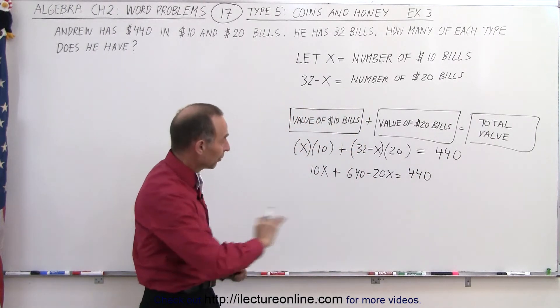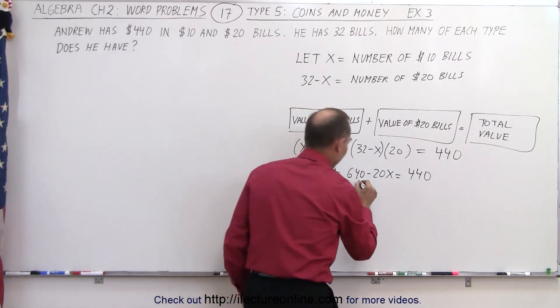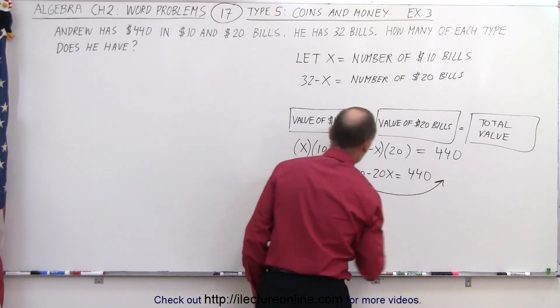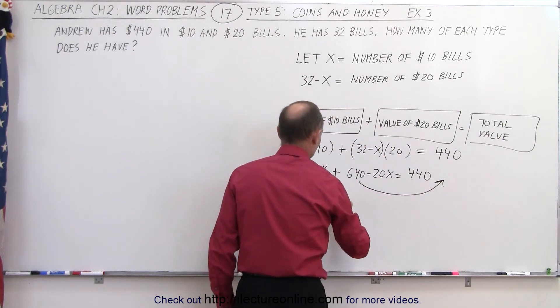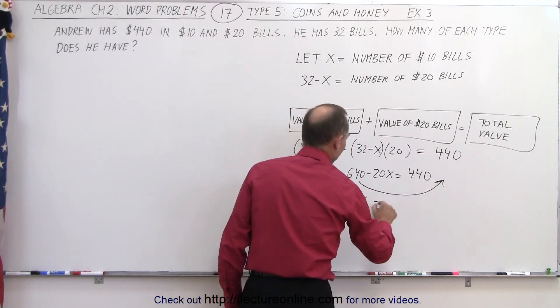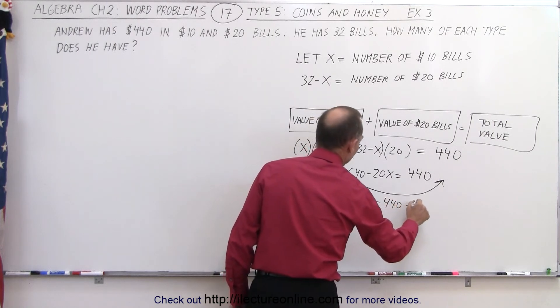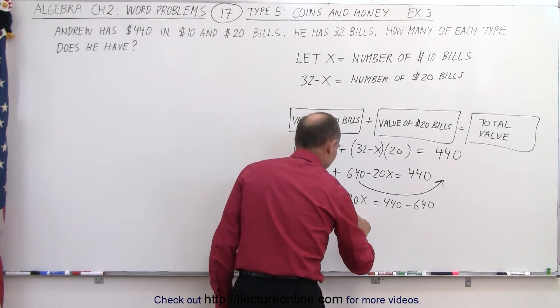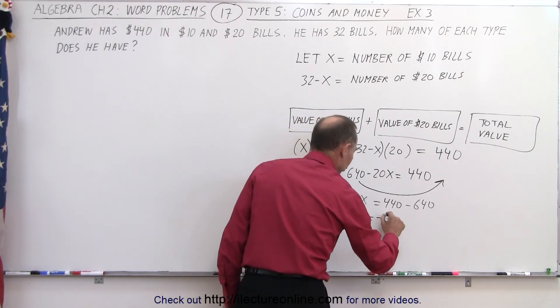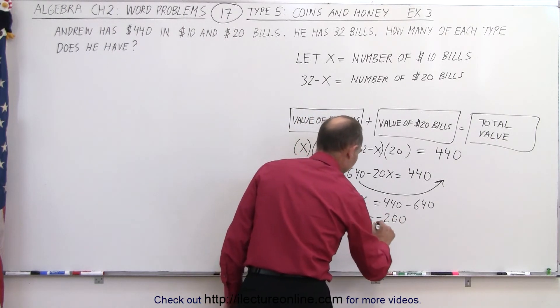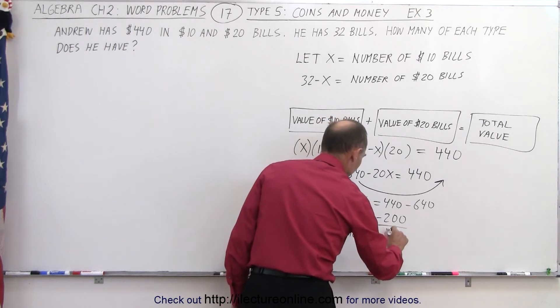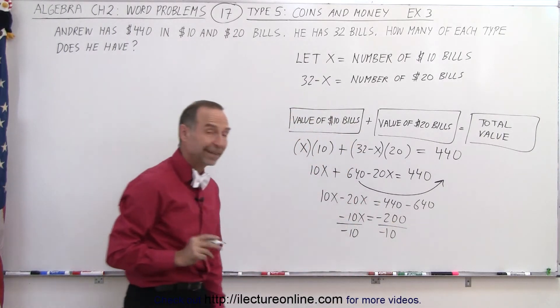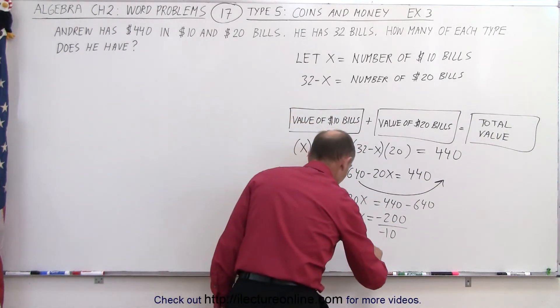So what we're going to do now is move all the numbers to one side, keep all the x's on the left side, so the $640 goes to the other side. So we end up with $10x minus $20x is equal to $440 minus $640. Combined like terms, minus 10x equals minus $200. Divide both sides by the numerical coefficient in front of the x, and therefore, x equals 20.